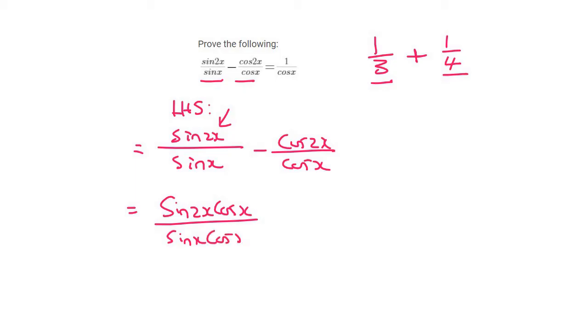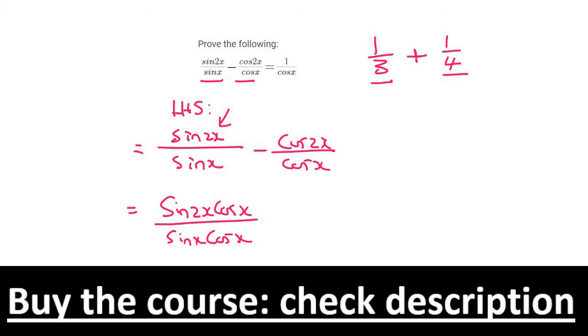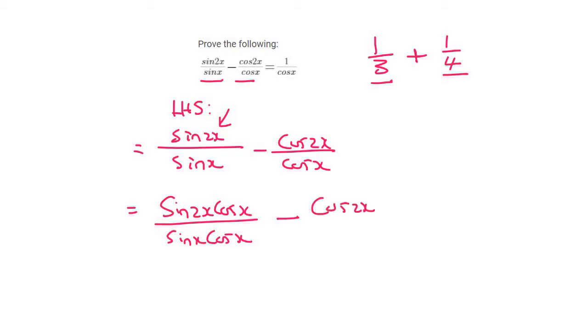We're not allowed to drop the denominator because this is not an equation, it's an identity. And so then we say cos 2x times, this one's going to be multiplied by sin x, and then that's going to be over the common denominator of sin x and cos x.